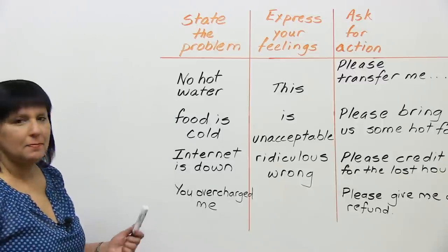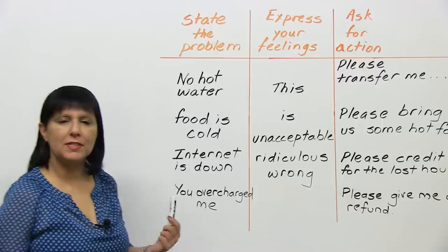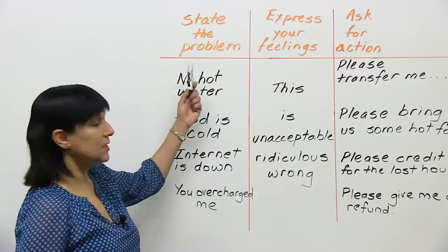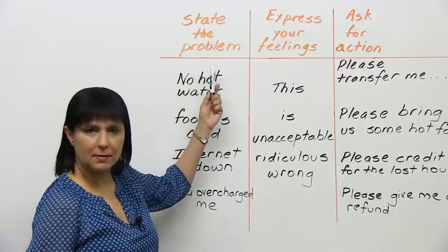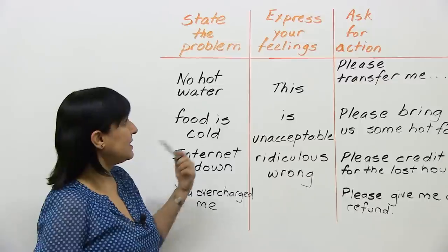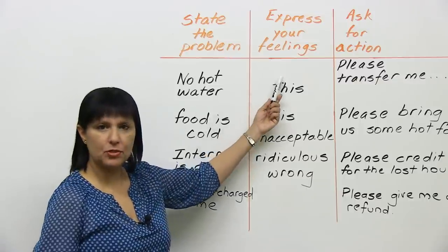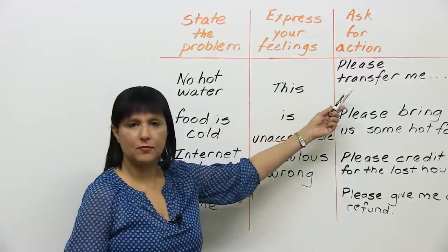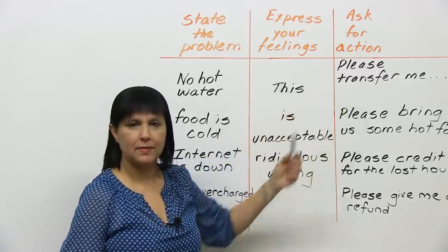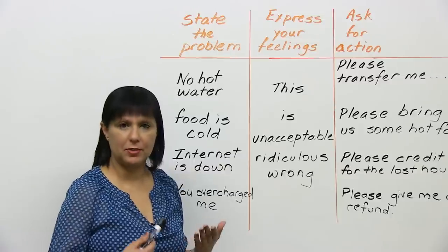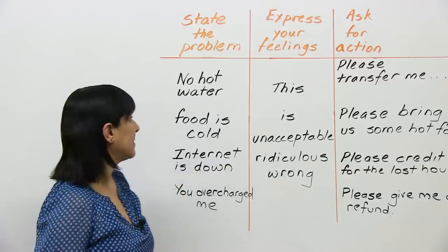The three steps are: first, state the problem; second, express your feelings; and last, ask for action. Let's look at some examples of how this works.